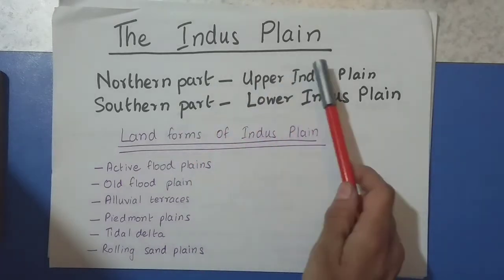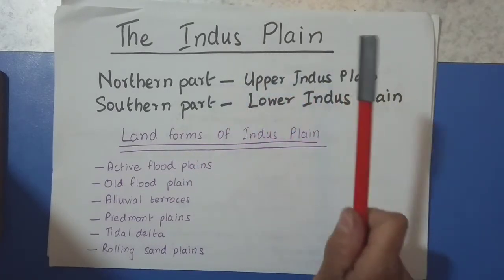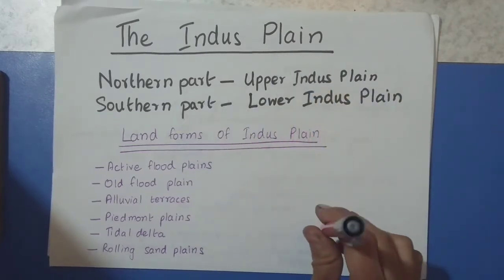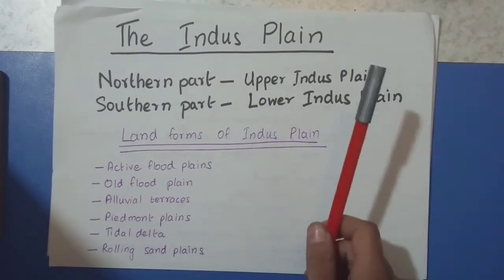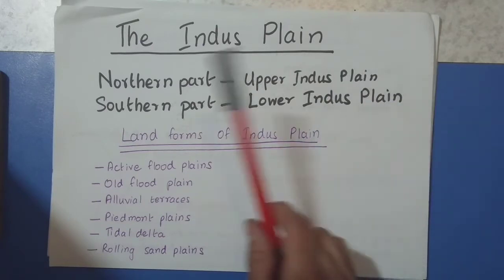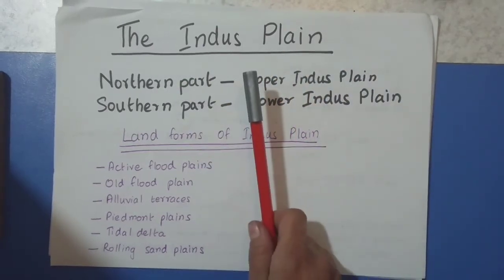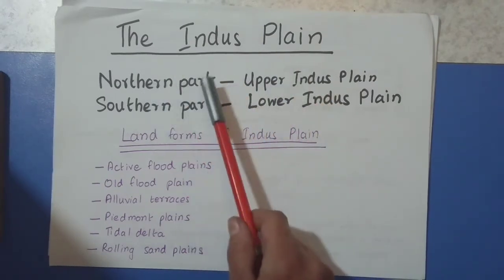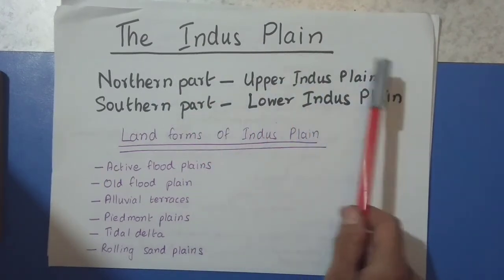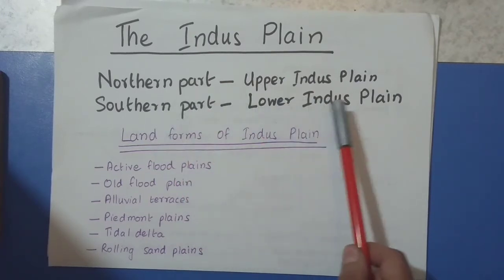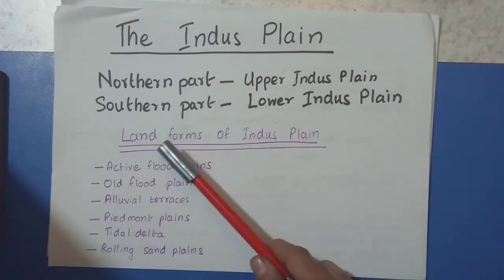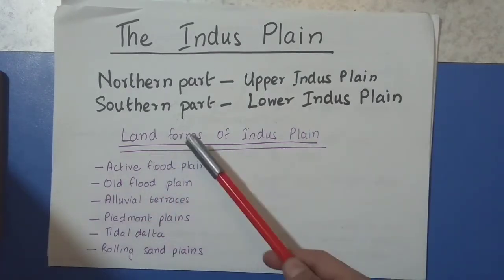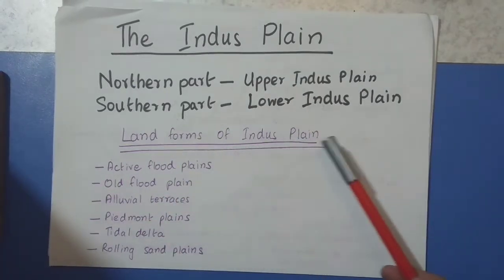Today we'll be talking about the Indus Plain. It is one of the topographical features of Pakistan. We already discussed that there are six topographical features of Pakistan, and today we'll be discussing the Indus Plain, which is one of them. The Indus Plain is divided into two parts. The northern part is called the Upper Indus Plain, whereas the southern part is called the Lower Indus Plain. There are various landforms formed within the Indus Plain itself, also called the topographical features of the Indus Plain.